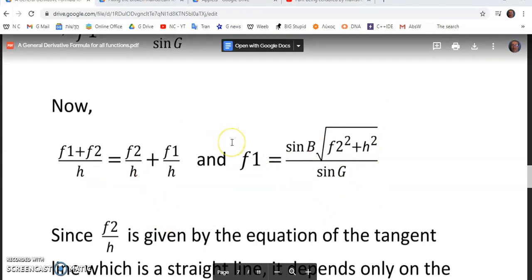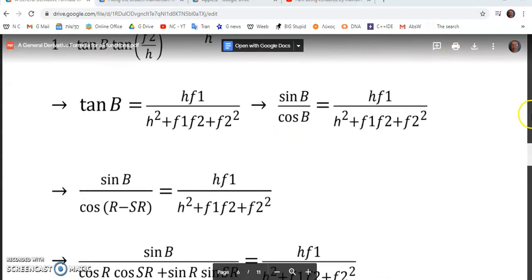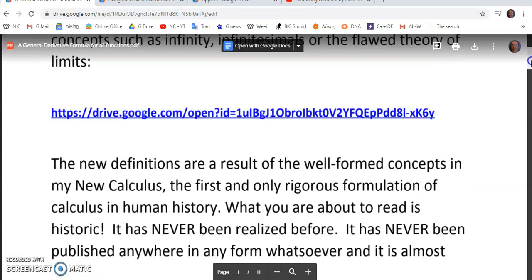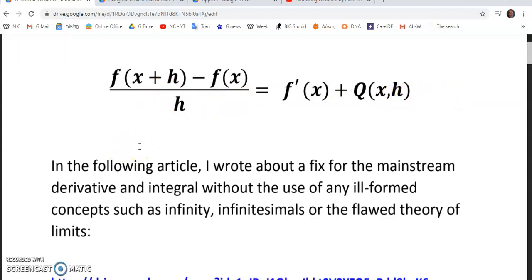This particular identity was discovered and it not only exposes the mainstream calculus as a fraudulent formulation and flawed in almost every respect, but also shows that the new calculus from which the identity was realized is the first rigorous formulation. This identity isn't part of the new calculus. It is realized from the well-formed concepts of the new calculus. It's entirely geometric. Nothing here is anything but 100 percent geometry.